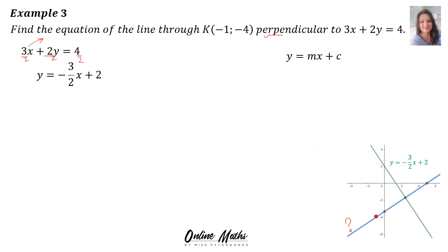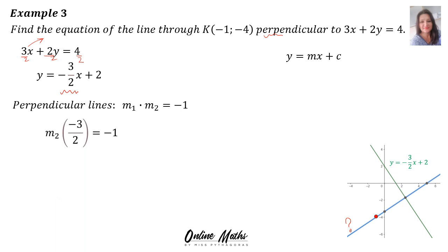We have coordinate K(−1, −4) on our line. For perpendicular lines the formula is m1 times m2 = negative 1. The green line's gradient is negative 3 over 2, so we substitute it in to work out the blue line's gradient. We multiply both sides by minus 2 over 3, and we end with the blue line's gradient equal to plus 2 over 3.